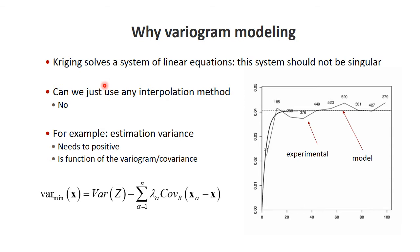So can we therefore just use any interpolation method? The answer is no. If we were just using any interpolation method, the kriging variance — which is the variance minus something — could become negative for certain functions of covariances. A negative kriging variance is basically meaningless. So we need functions that we know a priori have been investigated, that would always provide us with positive kriging variances. People in theory have developed what those functions are.